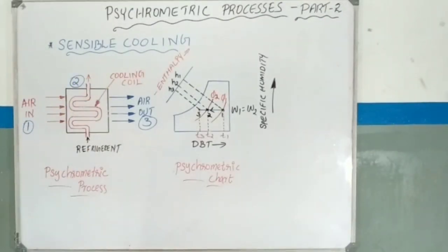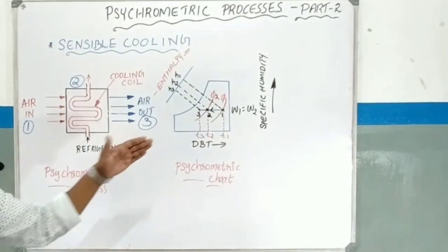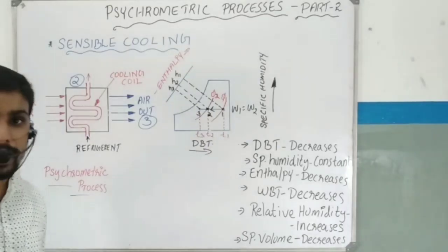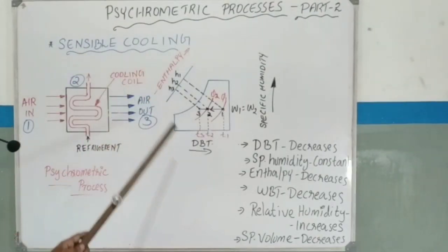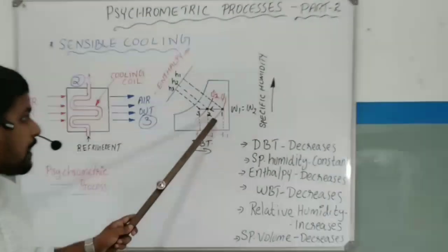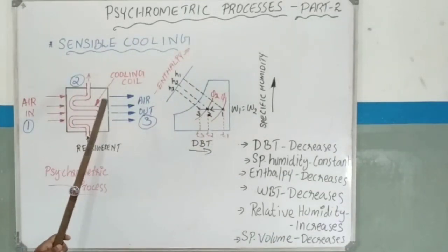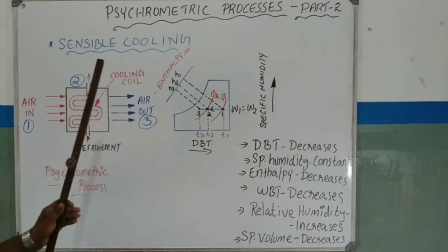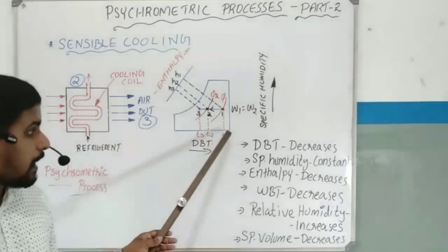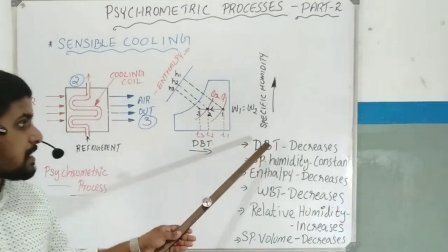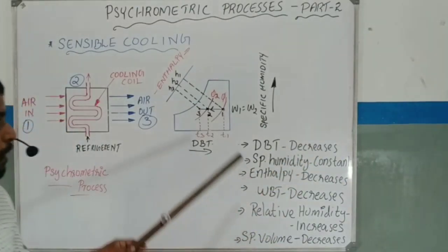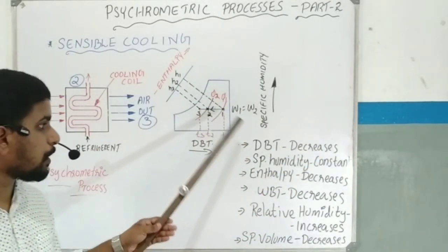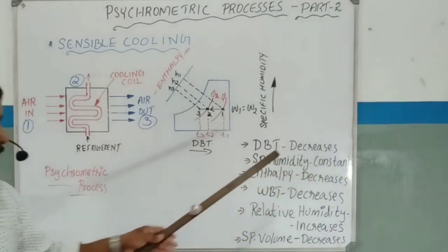In sensible cooling, the dry bulb temperature decreases. The specific humidity remains constant — it does not change. So in this process, the air is cooled at constant specific humidity.